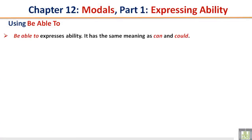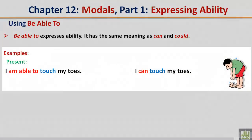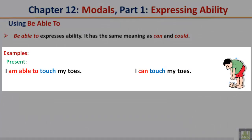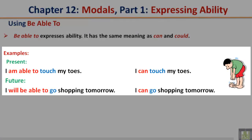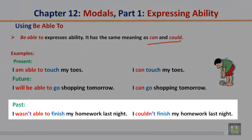Using be able to. Be able to expresses ability; it has the same meaning as can and could. Examples: I am able to touch my toes. / I can touch my toes. I will be able to go shopping tomorrow. / I can go shopping tomorrow. Past: I wasn't able to finish my homework last night. / I couldn't finish my homework last night.